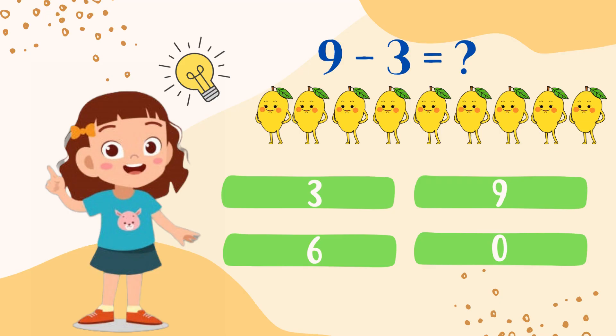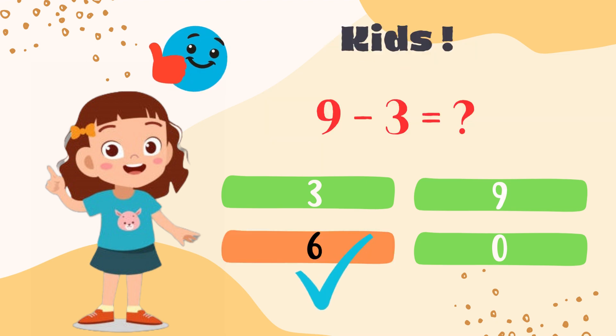You have 9 mangoes. 3 mangoes are eaten by you: 1, 2, and 3. You have eaten 3 mangoes. How many left? 1, 2, 3, 4, 5, 6. So 9 minus 3 is 6. Great my dear kids! What is